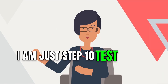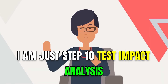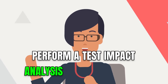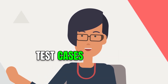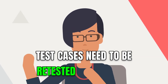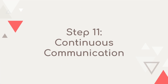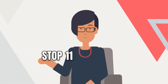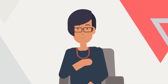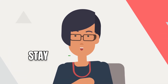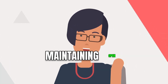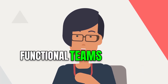Step ten: test impact analysis — perform a test impact analysis to identify which test cases need to be retested or modified. Step eleven: continuous communication — stay updated on project changes and priorities by maintaining open communication with cross-functional teams.